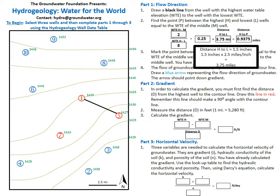We can use the given equation to find point P between the highest and lowest wells equal to the water table elevation of the middle well. The highest minus the middle elevation equals 2; the highest minus the lowest equals 8; 2 divided by 8 is 0.25. Next, measure the distance between the highest and lowest wells — approximately 1.5 inches. Using the map scale where 1 inch equals 2.5 miles, 1.5 inches equals 3.75 miles. Multiplying 3.75 miles by 0.25 gives us the distance from the highest well to point P, which is 0.9375 miles.